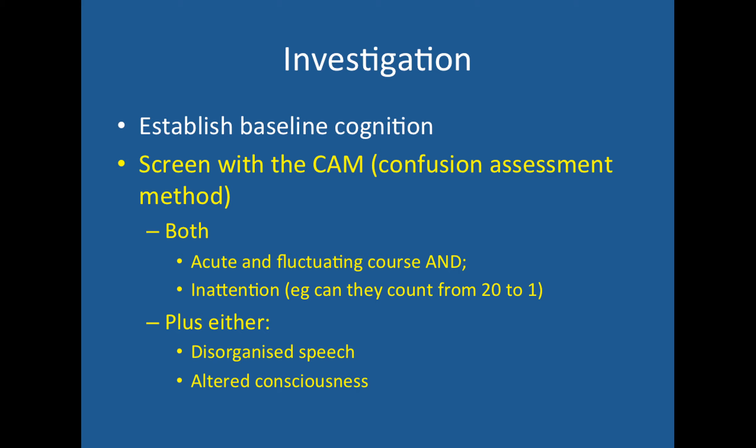To investigate delirious patients, first establish their baseline level of cognition. If they've been in this state for many months it might point to a different cause such as dementia. We can screen with the Confusion Assessment Method, which requires two things: that the presentation has an acute and fluctuating course and there is some inattention — a crude test is whether they can count from 20 backwards to 1. Then they need to have either disorganised speech or altered consciousness, reflecting their cognitive defect.